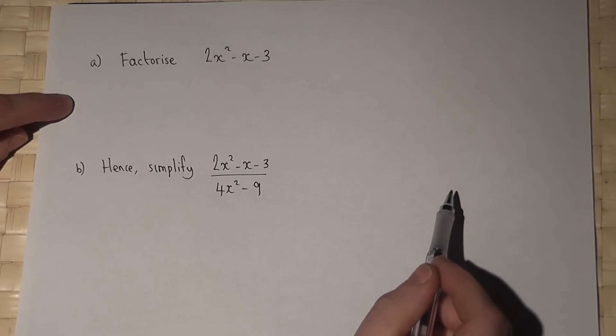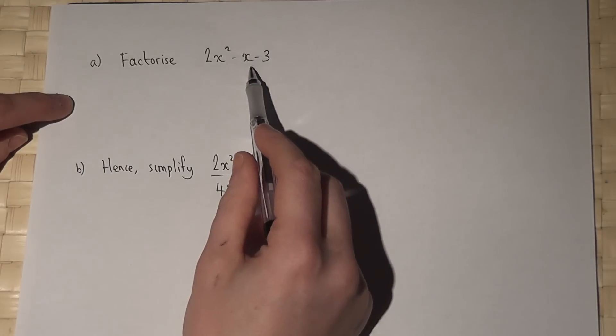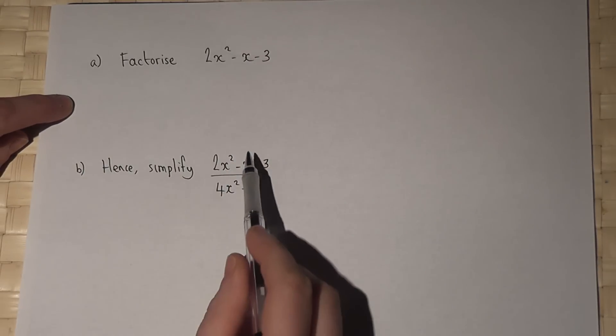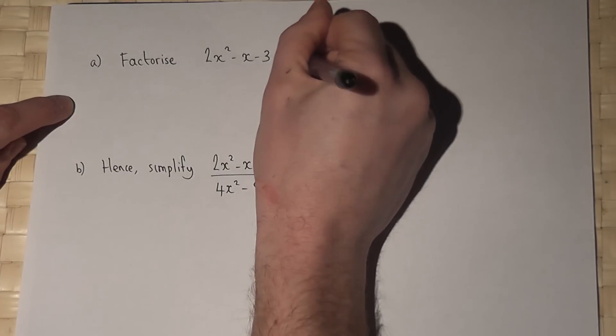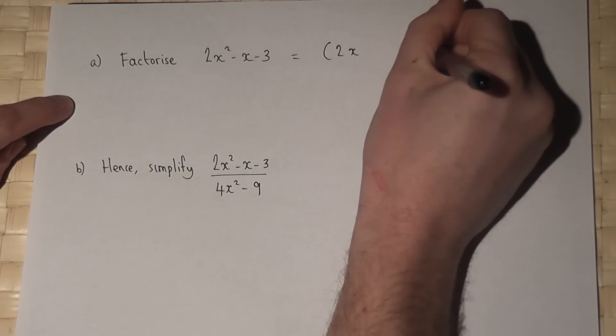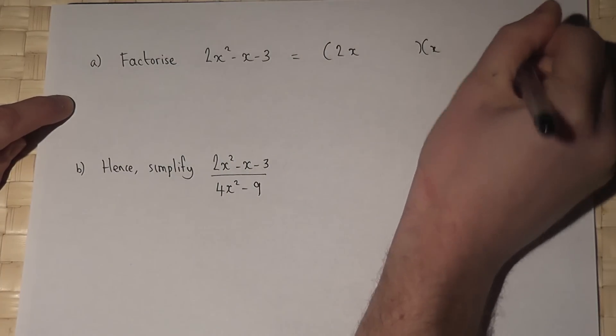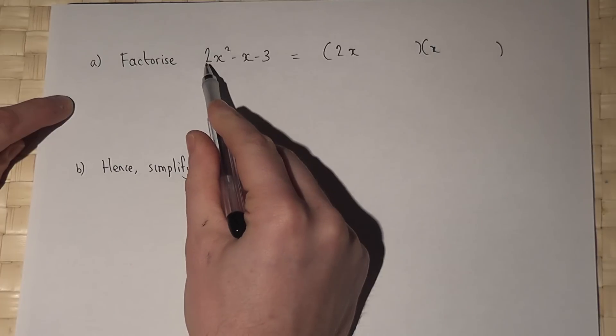This is a fairly routine question on factorizing and then simplifying an algebraic fraction. Now this sort of expression here factorizes with a 2x and an x to get a 2x squared.